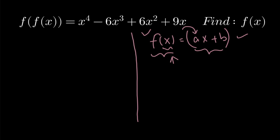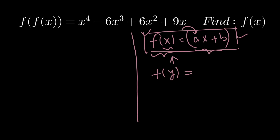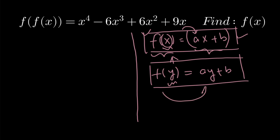Similarly, if it has been given that f has a particular value, and we need to find the value of f of y, all we need to do is change the variable x with y. When we do so, the equation turns out to be ay plus b. The function is simply this equation and what variable to use in it is given by the value present in the bracket.